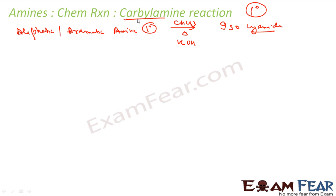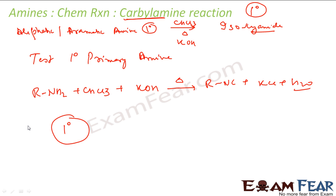Because the output is isocyanides or carbylamine. Please note, this is only for one degree, aliphatic or aromatic. This is used to test primary amine. The reaction is like this: R-NH2 reacts with chloroform, ethanolic KOH, heat this, you get R-NC and then KCl and some water. This is the reaction mechanism. This is only for one degree and is used to differentiate between one degree or two degree and three degree amines.